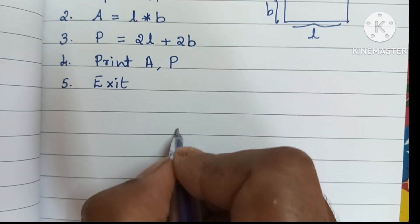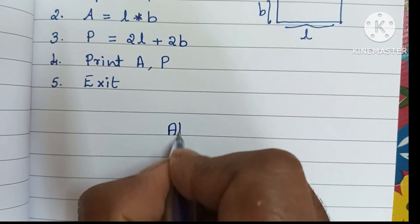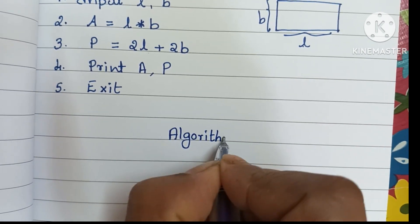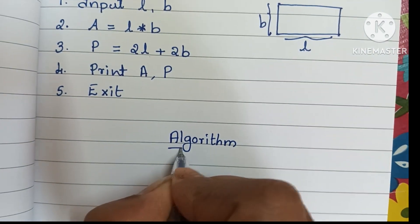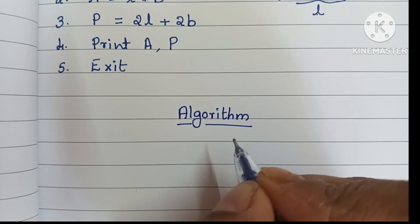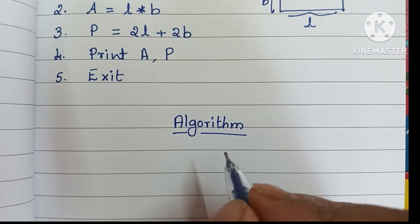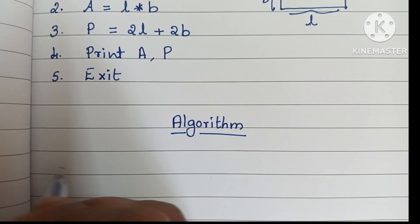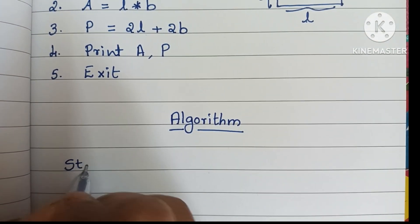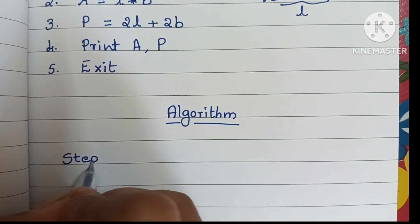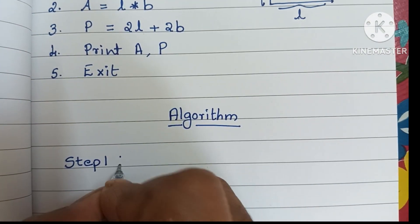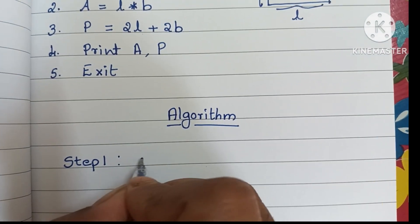Next we are going to write the algorithm. An algorithm is a step-by-step process to solve a problem. An algorithm always starts with a start statement, so the first step is to write the start statement.